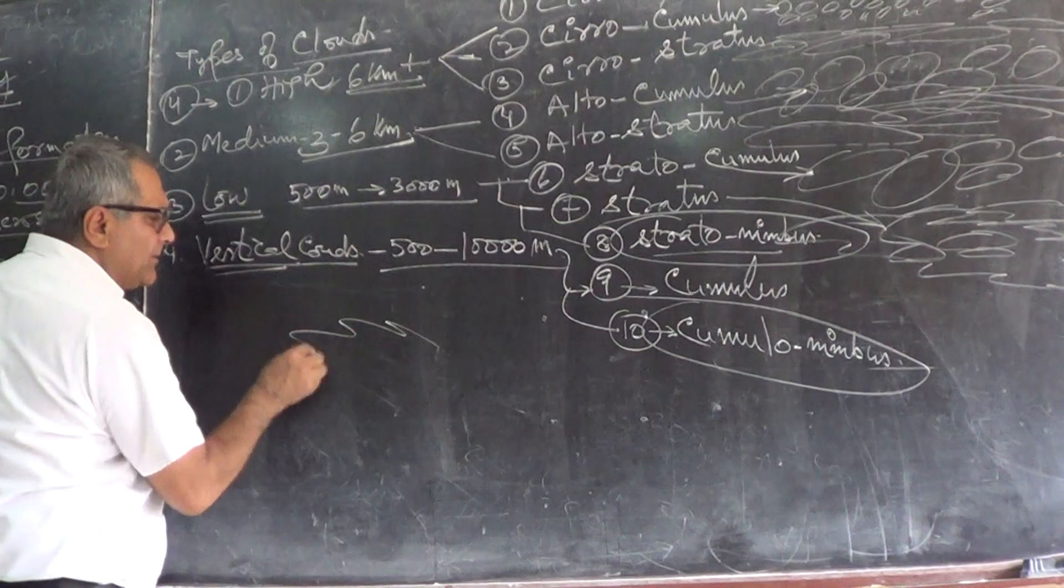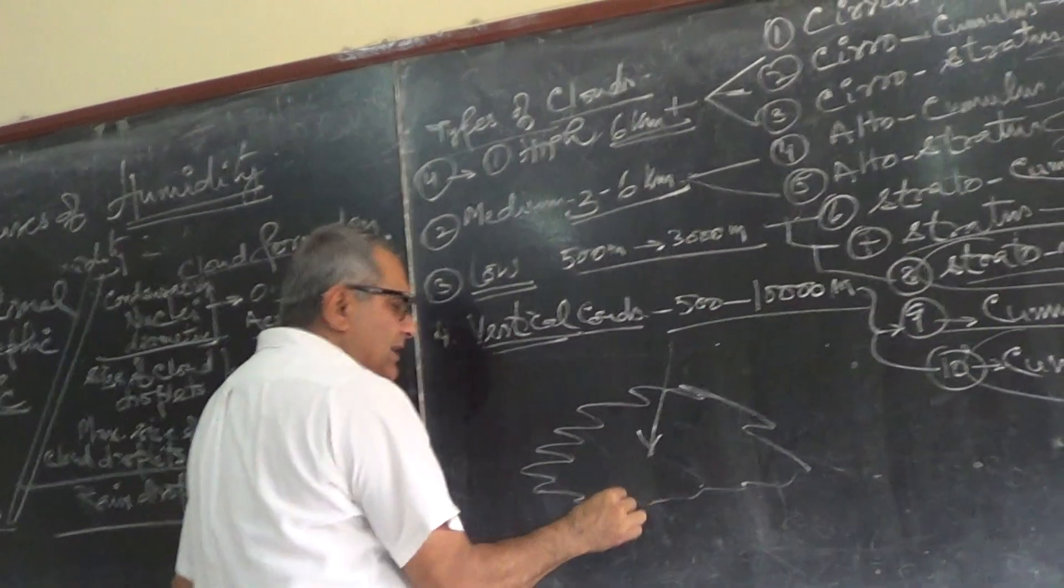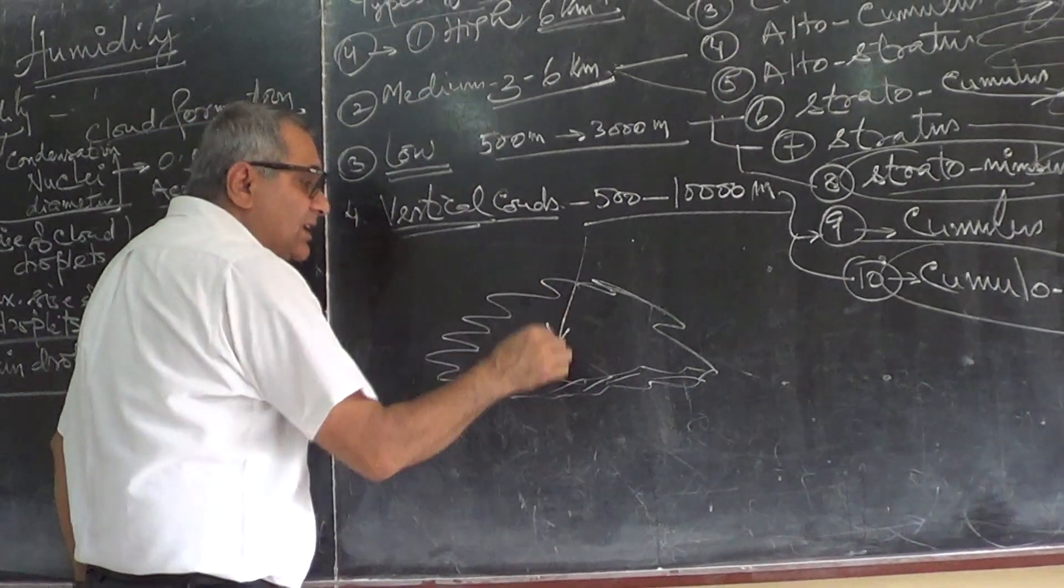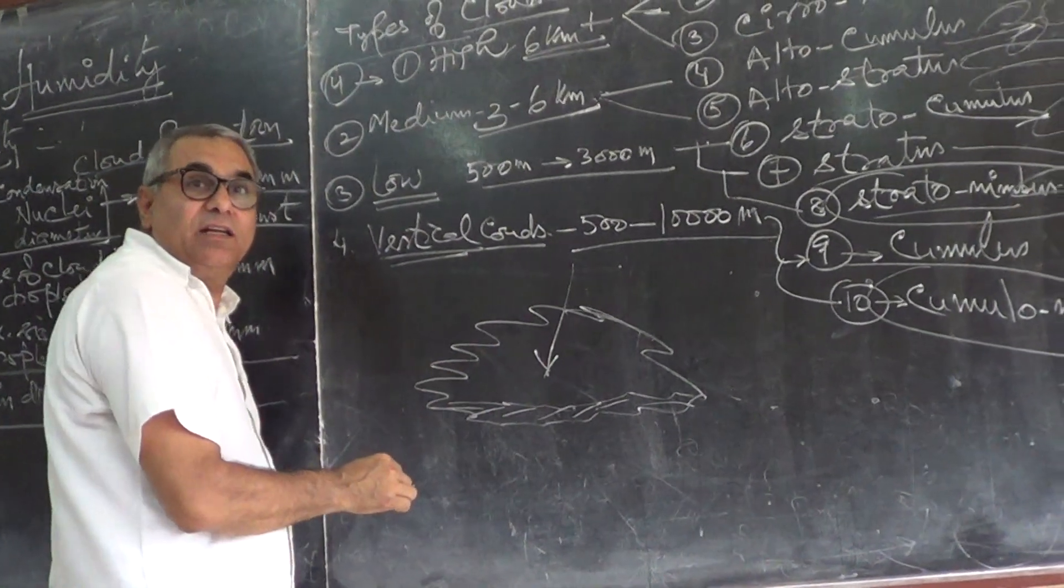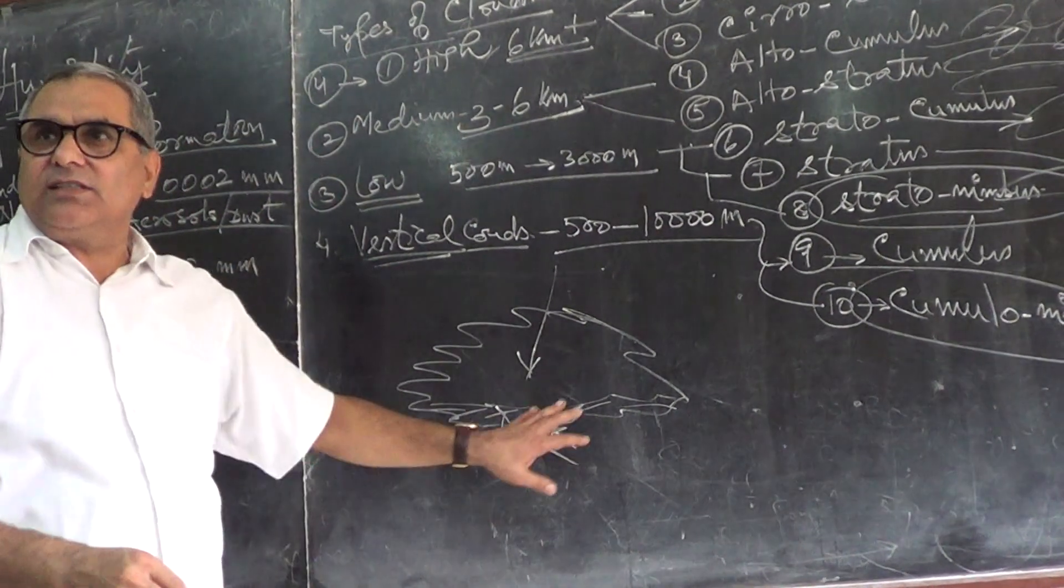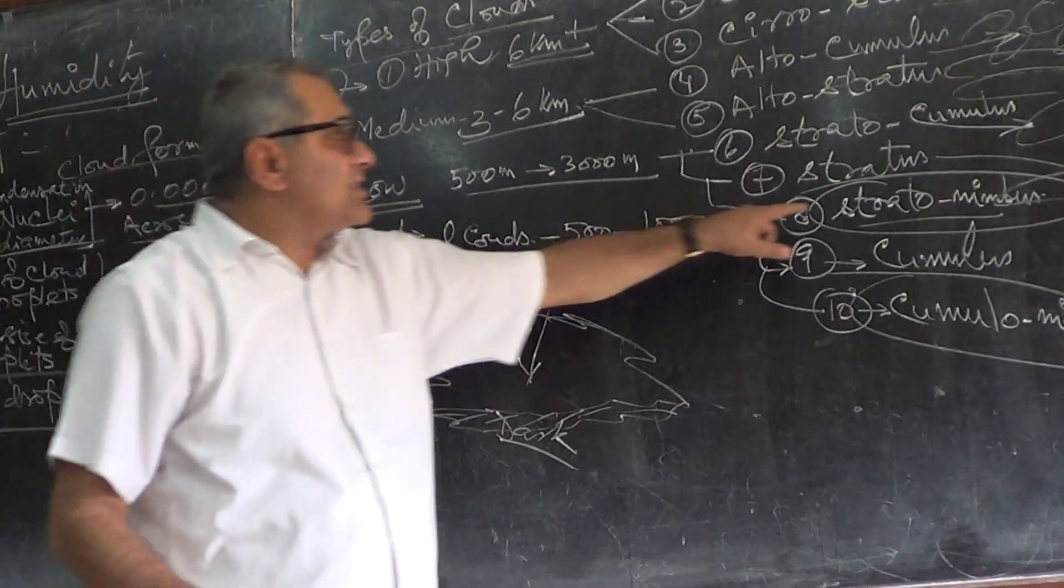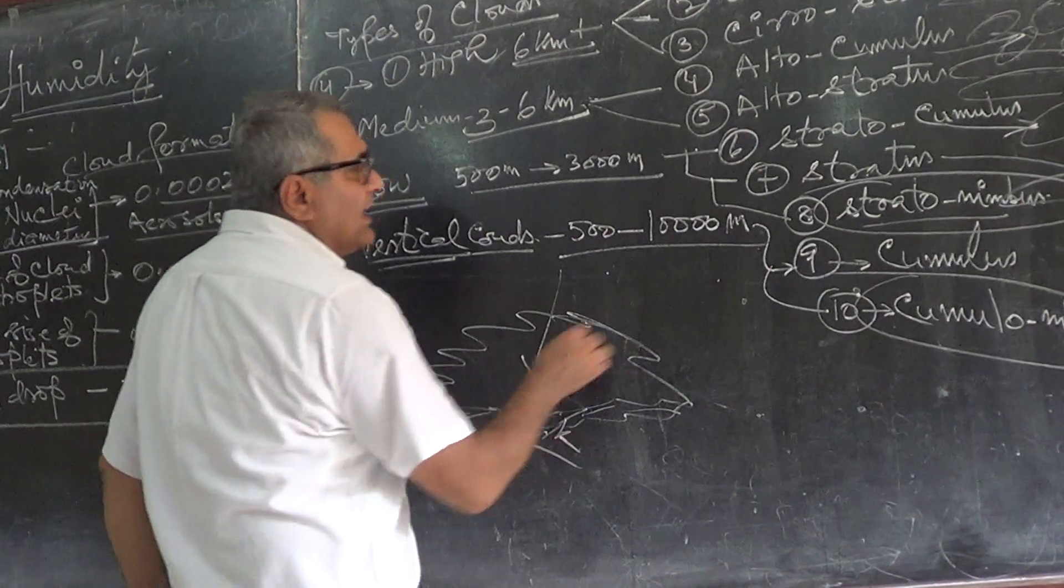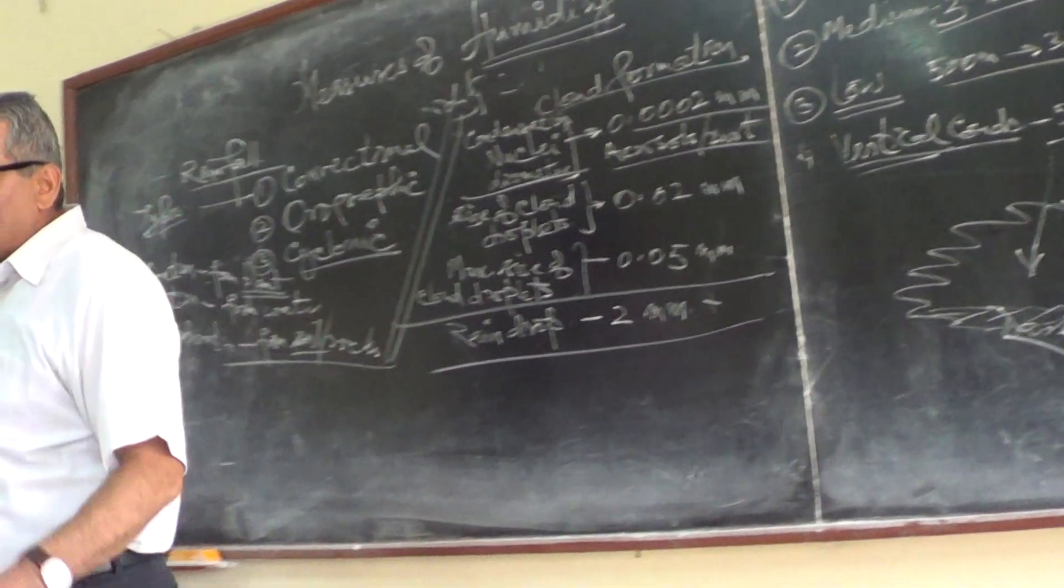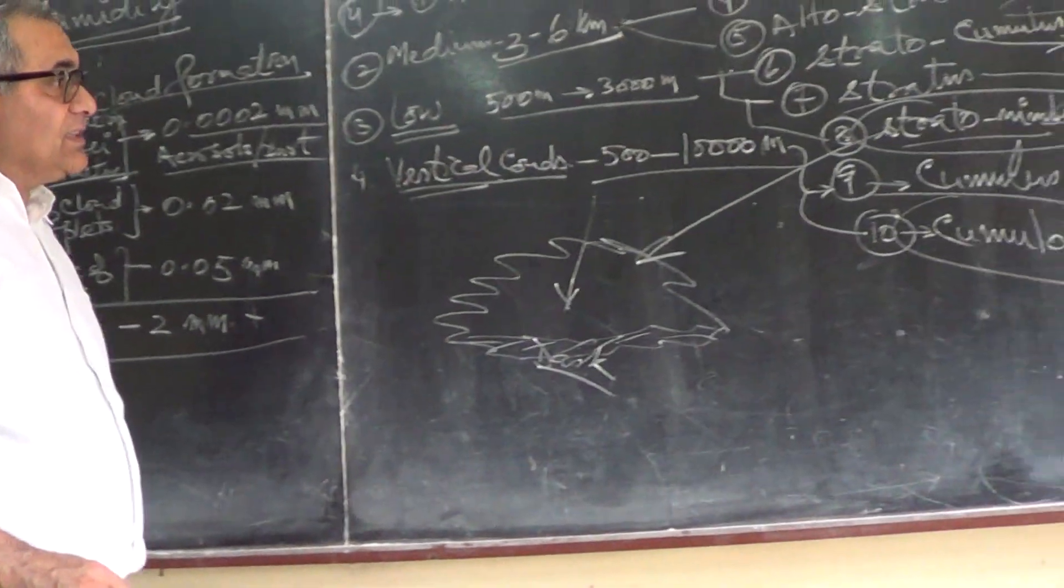They are nimbus basically. So the stratonimbus looks like this cloud. The lower portion becomes like this. And after this, the cumulus.